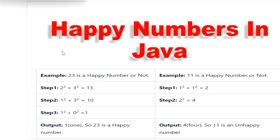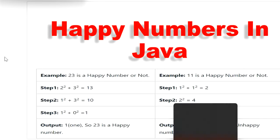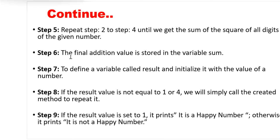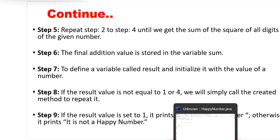Now let's start writing the code following all these steps. We repeat steps 2 to 4 until we get the sum of the squares of all digits of the given number, stored in the variable sum. Then we check if the result equals 1 or 4. If the result is 1, it is a happy number; otherwise it is not a happy number.